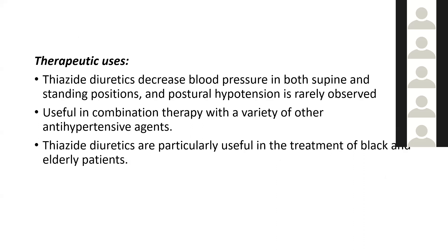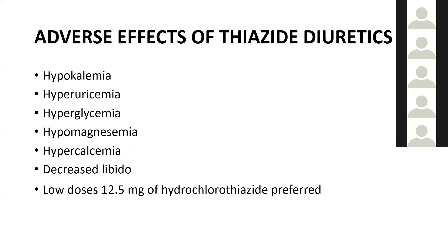Therapeutically, thiazide diuretics decrease blood pressure in both supine and standing positions, and postural hypertension is rarely observed. They are useful in combination therapy and are particularly effective in treating black and elderly patients. Adverse effects include hypokalemia, hyperuricemia, hyperglycemia, hypomagnesemia, and hypercalcemia, as well as decreased libido. Therefore, thiazide diuretics are preferred at low doses, mainly 12.5 mg.